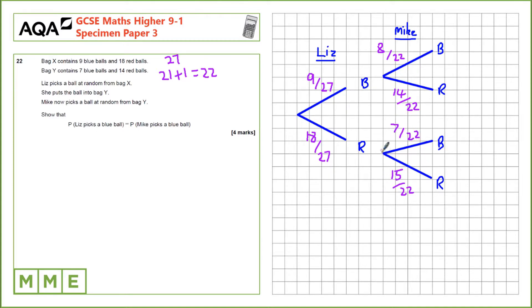So we need the probability that Liz picks a blue ball, that's 9 over 27, and we want to calculate the probability that Mike picks a blue ball. There's two paths for that, so there's this one then this one, so that would be 9 over 27 multiplied by 8 over 22 and that's equal to 72 over 594.